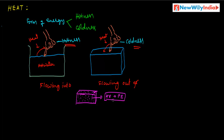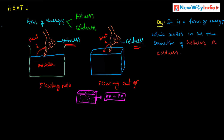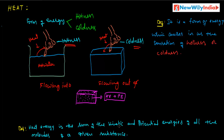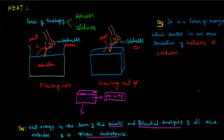Now, what is the definition of heat? The definition of heat is: it is a form of energy which causes the sensation of hotness or coldness. That is the definition of heat. We can conclude that heat energy is the sum of the kinetic and potential energies of all molecules of a given substance. Heat is a form of energy which causes the sensation of hotness and coldness. Heat and cold are relative terms.